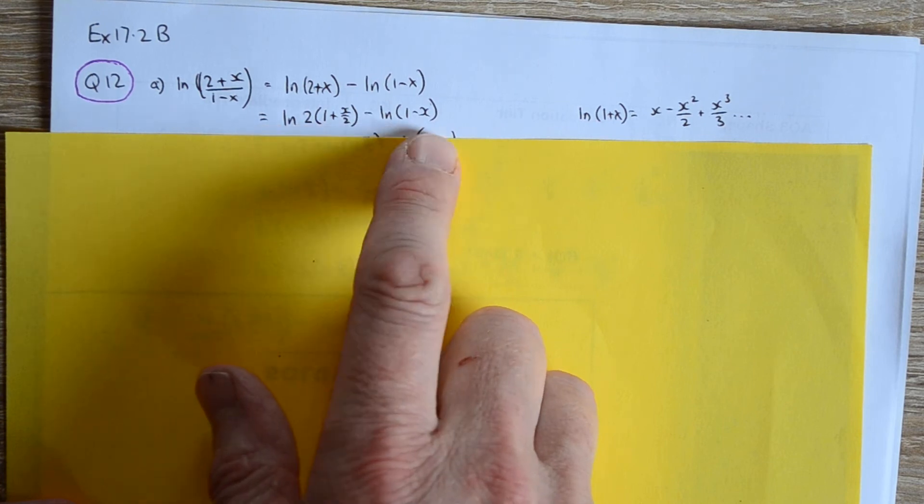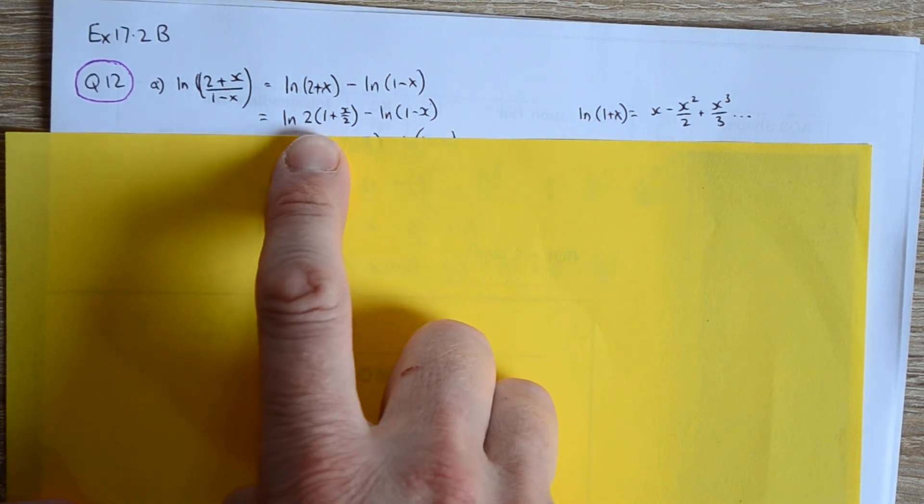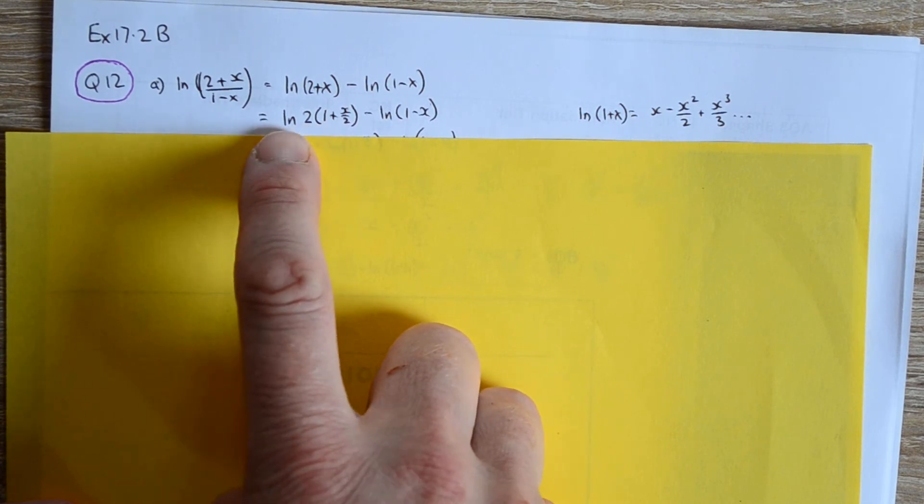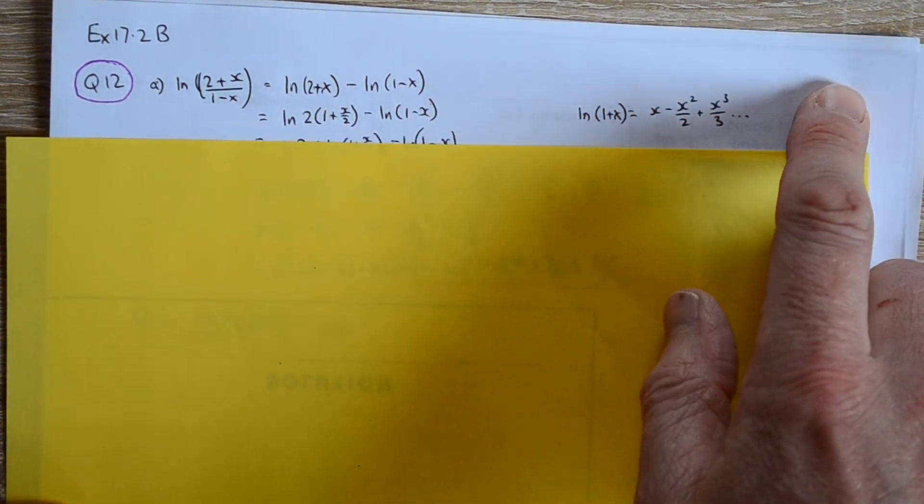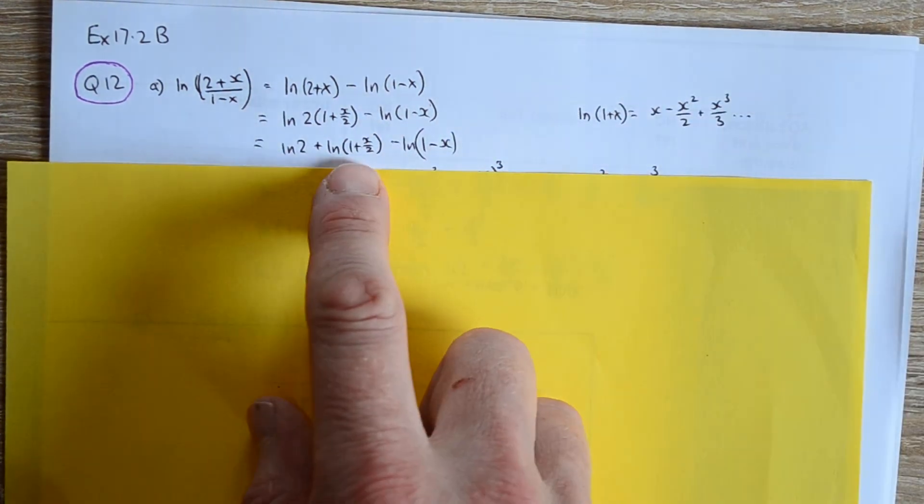Now it's in this form where we've got a product of two items together, we're finding the ln of all of this, and so again we can use log rules to split that up into the addition of those two logs.